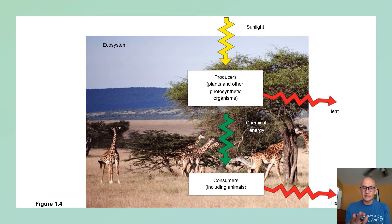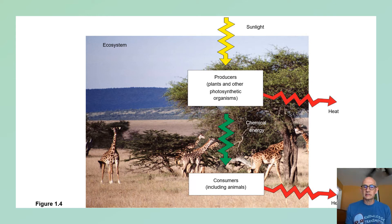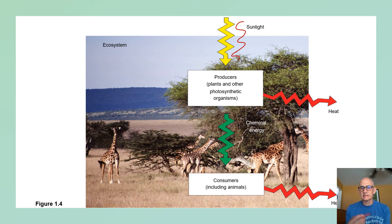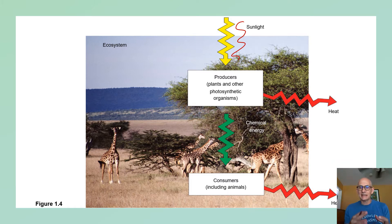Looking at this picture, we can see different living systems — the trees, the grasses, the giraffes — but we also see abiotic things, particularly sunlight coming in. There's also heat given off as things consume energy, and you've got the air, the water, the soil — all of these things coming together to make a very dynamic system that makes up life.